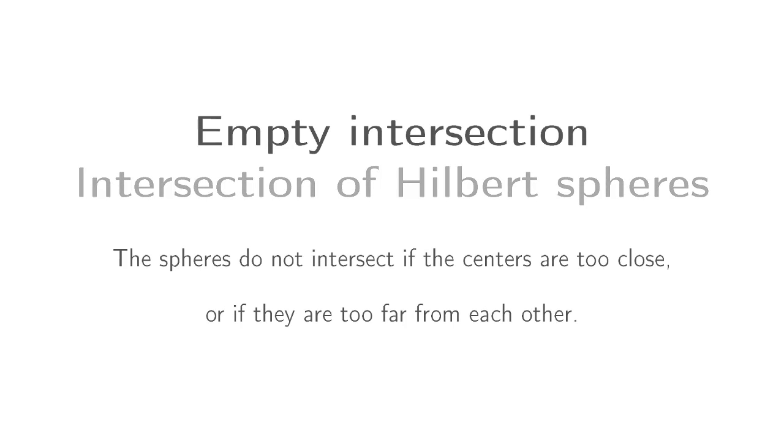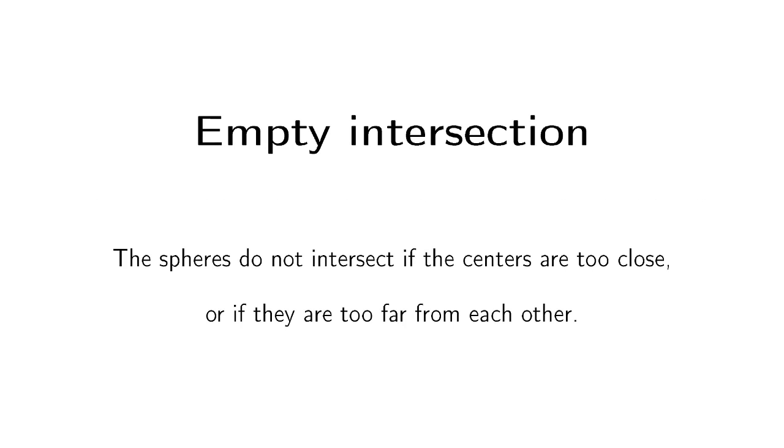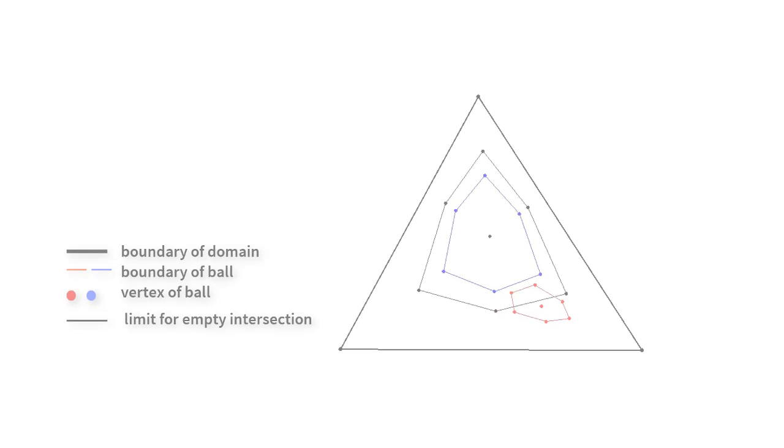Finally, let us study the intersection of two Hilbert spheres. Because the Hilbert metric respects the triangular inequality, the criteria of an empty intersection is the same as in Euclidean geometry. If the centers are too close or too far away, the spheres will not intersect.